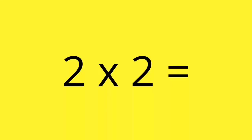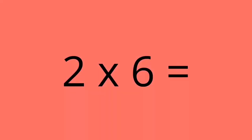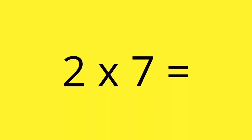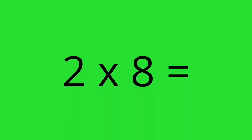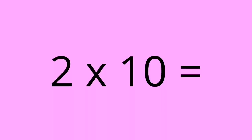2 times 1 equals 2. 2 times 2 equals 4. 2 times 3 equals 6. 2 times 4 equals 8. 2 times 5 equals 10. 2 times 6 equals 12. 2 times 7 equals 14. 2 times 8 equals 16. 2 times 9 equals 18. 2 times 10 equals 20.